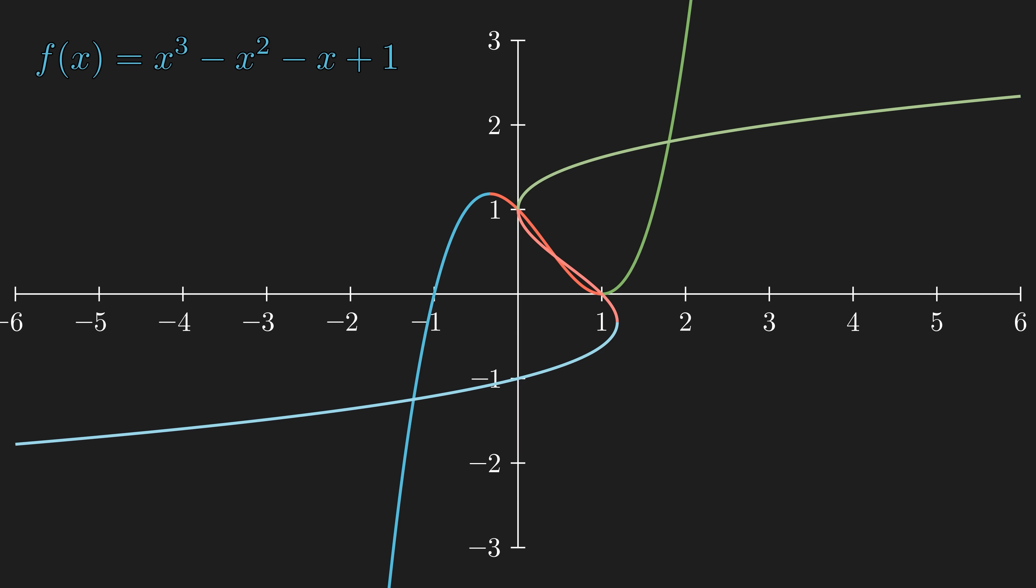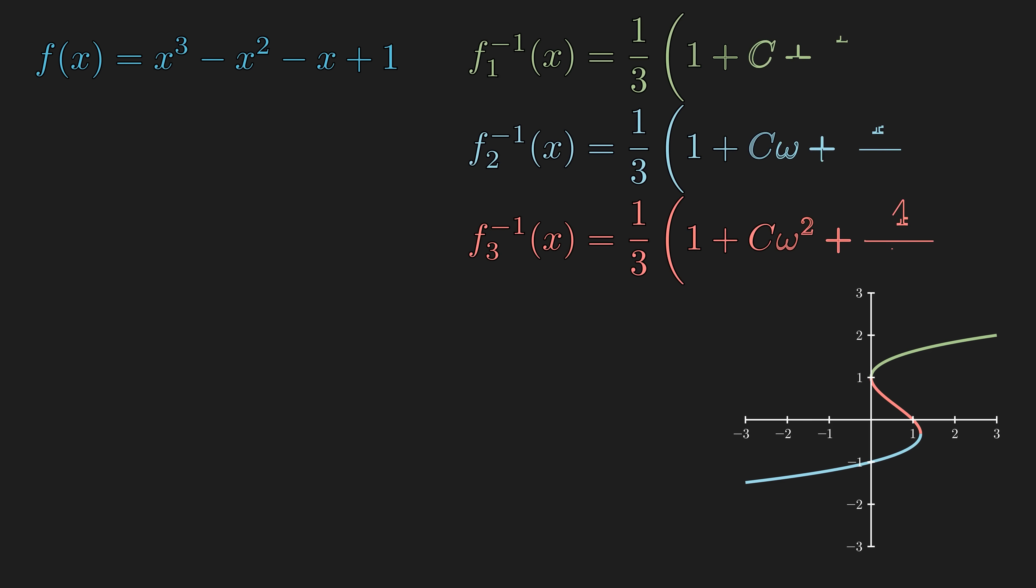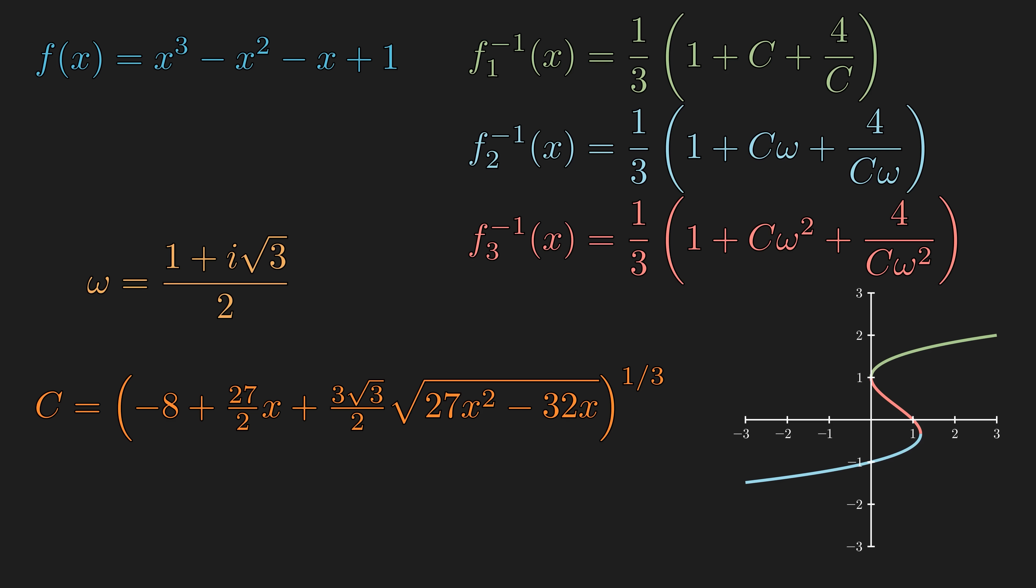But can we come up with the formula for each branch? Formula indeed does exist, and in fact, it is called the cubic formula. But it is incredibly complex, pun intended, just to find an algebraic formula for inverses of such a simple-looking function.